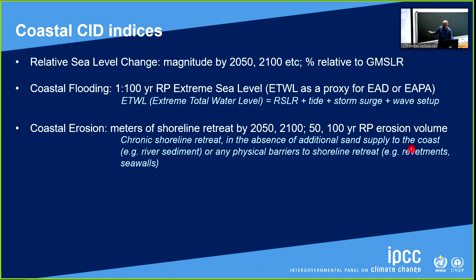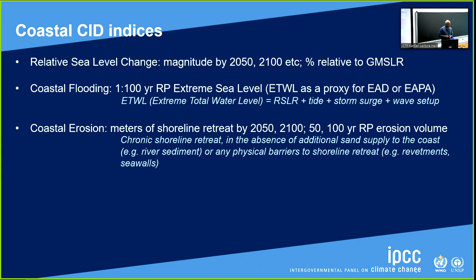We did not have storm erosion projections with global coverage at the time of AR6, and it would be quite a challenge to make such a database. We did have information on chronic shoreline retreat — the longer-term shoreline retreat mostly due to sea level rise. There is always a caveat: in AR6, when we refer to shoreline retreat, it is in the absence of additional sand supply or any physical barriers. In places where these exist, projections will be different. It's important to note that.